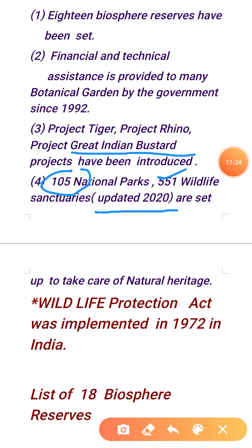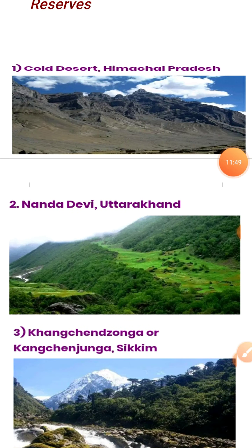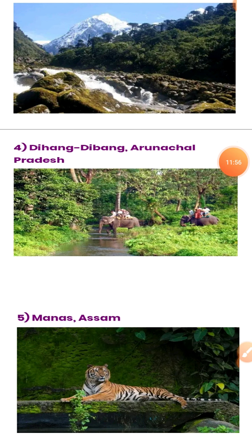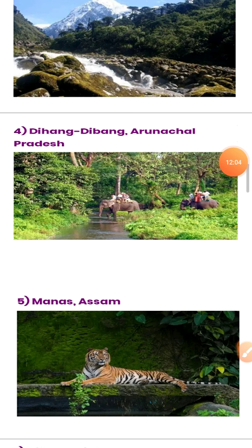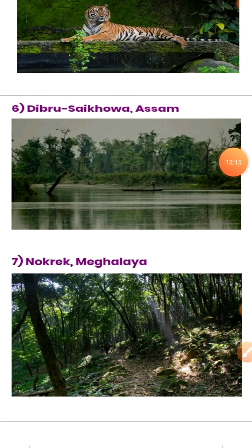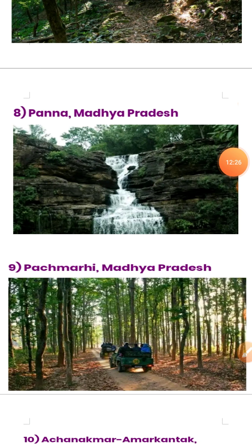Let's see the 18 biosphere reserves and their locations. First: Cold Desert in Himachal Pradesh. Second: Nanda Devi in Uttarakhand. Third: Kanchenjunga in Sikkim. Fourth: Dihang-Dibang in Arunachal Pradesh. Fifth: Manas in Assam. Sixth: Dibru-Saikhowa in Assam. Seventh: Nokrek in Meghalaya. Eighth: Panna in Madhya Pradesh.